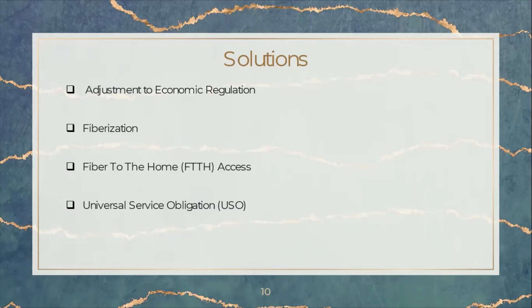The second solution is fiberization. To solve this problem, investment incentives in fiber connection or fiberization are needed. The government should support providers or operators to develop fiberization so that people in rural areas can access fiber network services. The government also provides access to right-of-way ducts and poles, reducing barriers for municipal authorization, and ensuring duct investment for minimum maintenance.